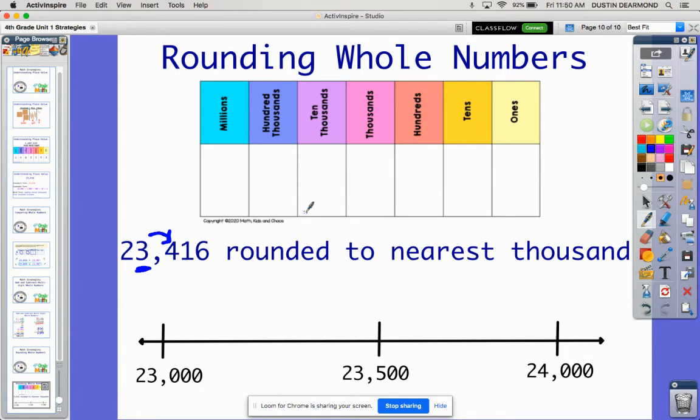Now one strategy is using a number line to help us visualize where it should go. So I put here, it doesn't have to be anything fancy. I know that we're rounding to the thousands place. I didn't need all these little hundreds and tens and ones numbered off. I'm really just worried about the thousands. So I put 23,000 over here, which is the number 23,416. That's the lowest it can go. We're rounding to the thousands place. So I can either round it down to 23,000 or I can round up to 24,000. So I'm really only worried about the thousands place.